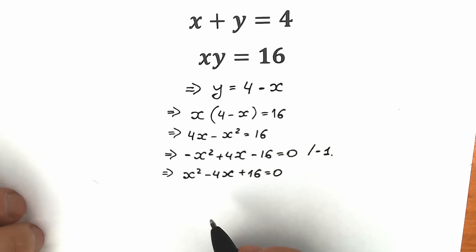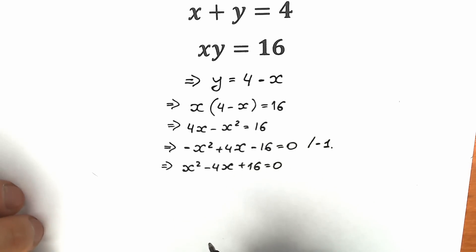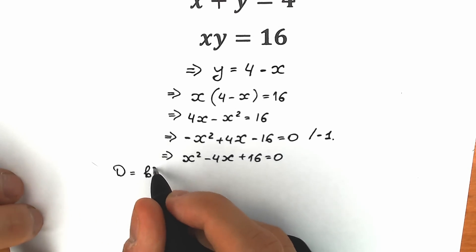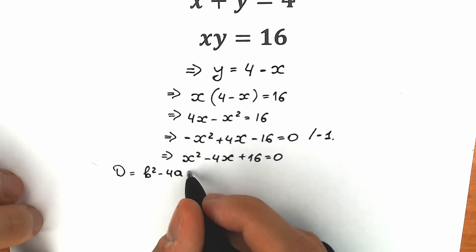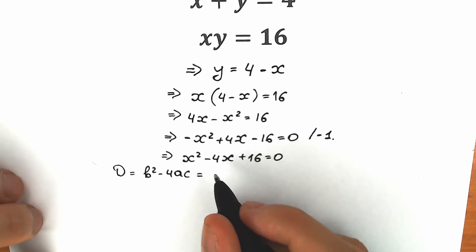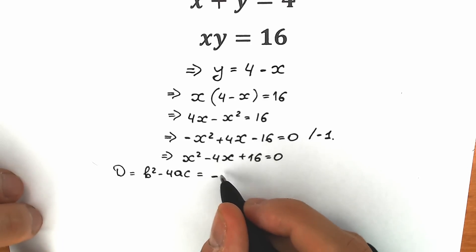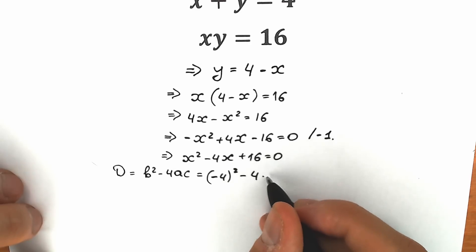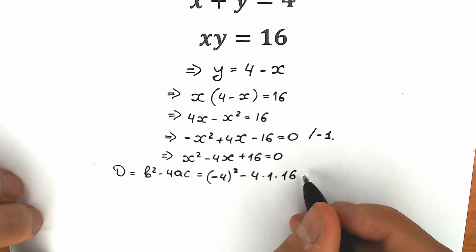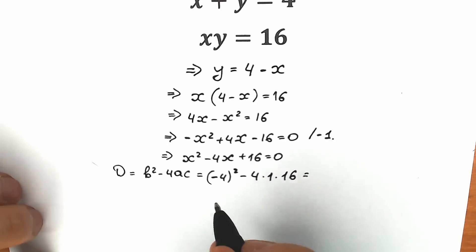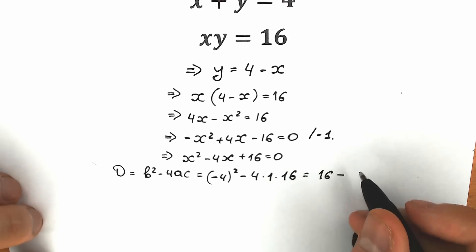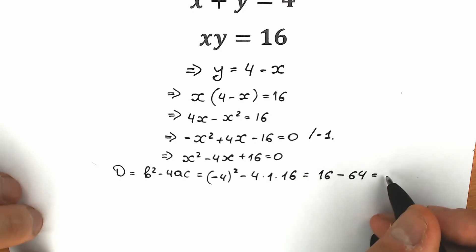There are a lot of approaches to find the roots. Let's find the discriminant. The discriminant equals b squared minus 4ac. Our b equals minus 4, so we have (minus 4) squared minus 4 times 1 times 16, which gives us 16 minus 64.